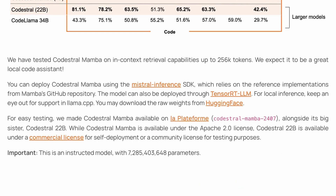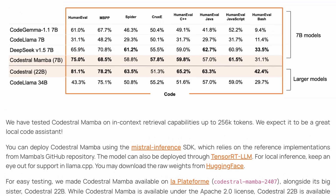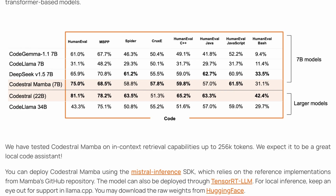So that's what this new model is using, and it's smaller as well, making it great to be used in a co-pilot scenario. The model also has a 256k context limit, which is quite cool. Now let's look at the benchmarks.